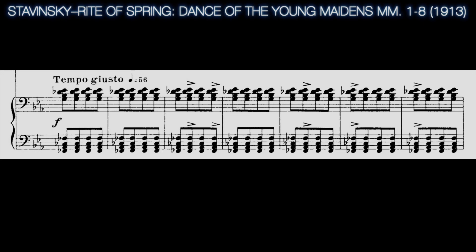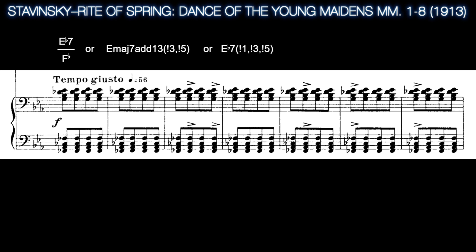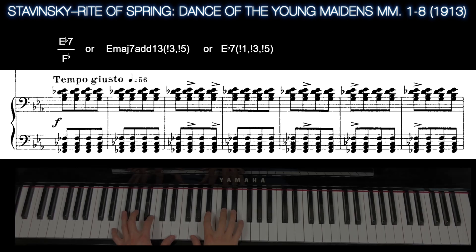The chord that opens the 'Dance of the Young Maidens' from Stravinsky's Rite of Spring is nearly as well known as the piece itself — a polychordal E♭7 over F♭ major that can be heard as an E major 7 add 13 chord with two split members, or as an E♭7 chord with three split members. The passage is completely devoid of melody or counterpoint, relying instead on rhythm, dynamics, registration, instrumentation, and harmonic density for its brutal effect.